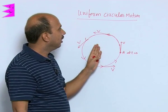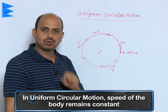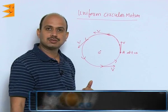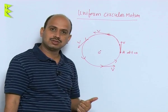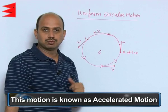So, in this case, if it is a uniform circular motion, speed of the body remains constant, whereas velocity changes due to change in direction. As a result acceleration changes, therefore this motion is said to be accelerated motion.